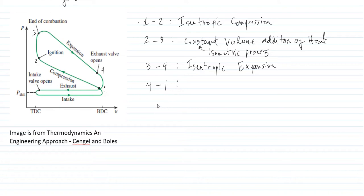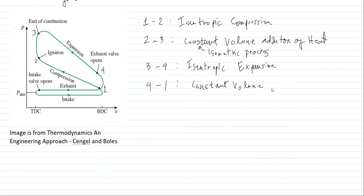The last process is 4 to 1, which is the constant volume rejection of heat. Again, this is a constant volume, isometric process — but this time it is the rejection of heat.